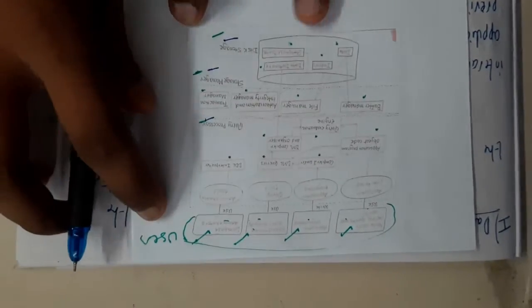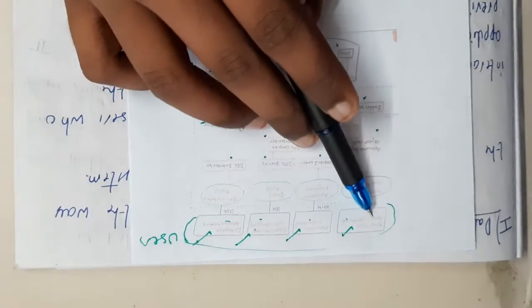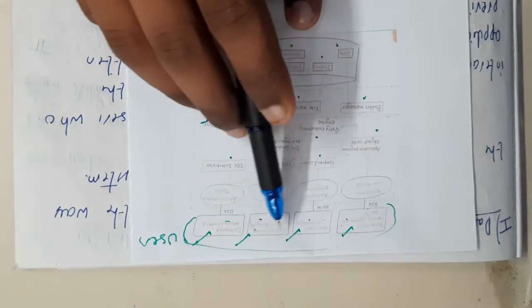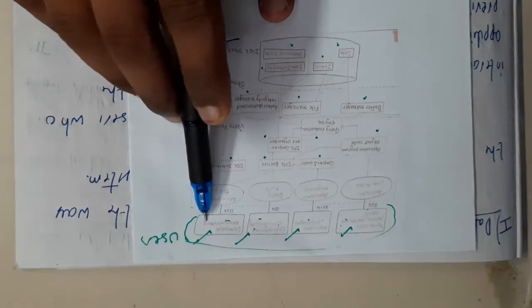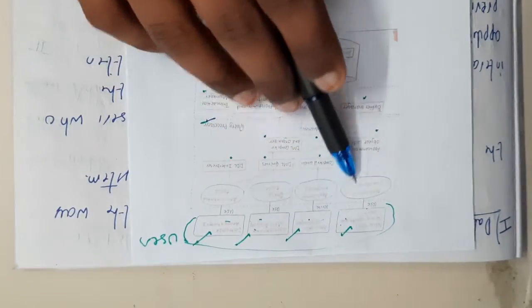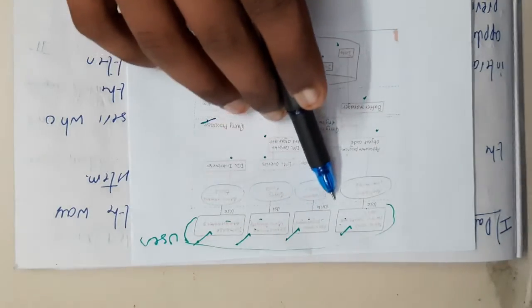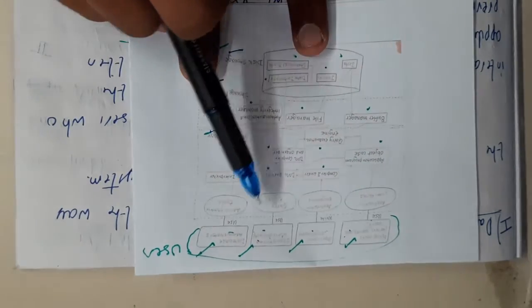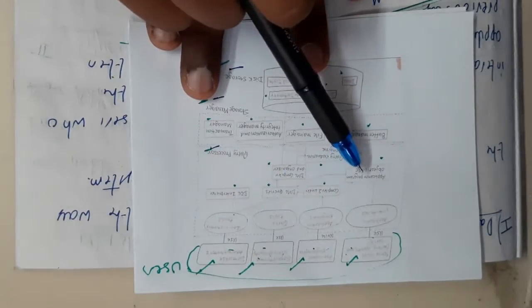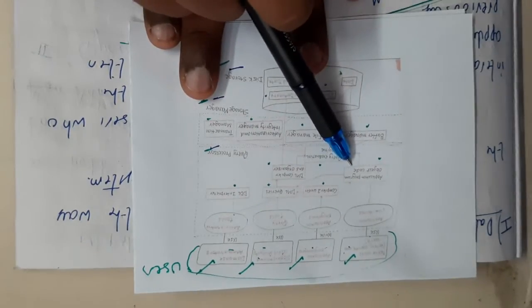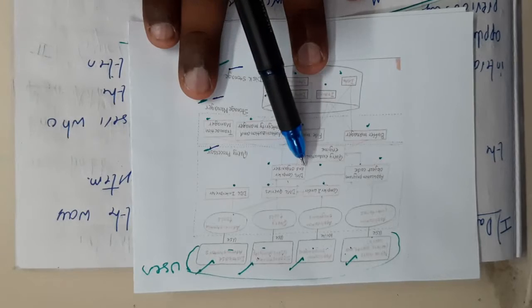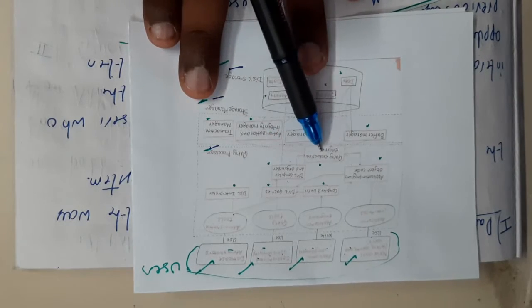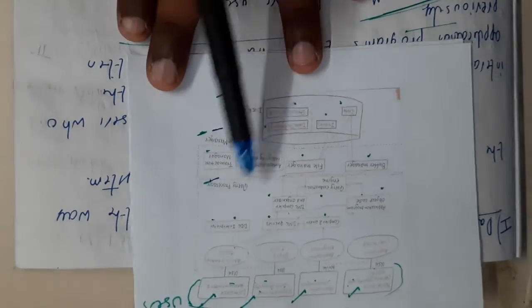There are totally four types of users in database. The first type will be the naive user, second type is the application programmer, third type will be sophisticated users or query users, and fourth will be your database administrators. We are also having application interface, application program, query tool, and administrator tool — these are connected to various blocks: application program object code, compiler and linker, DML queries, and organization query engine.